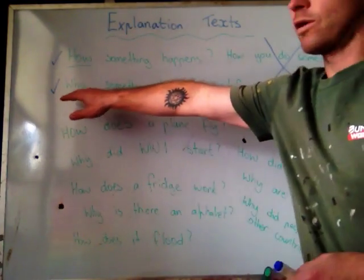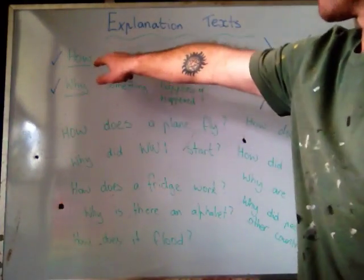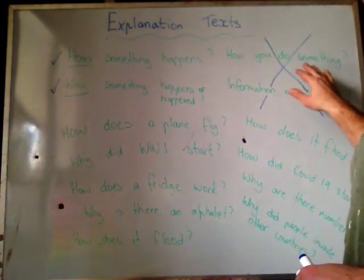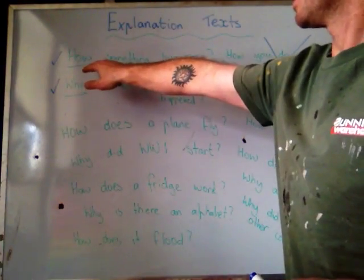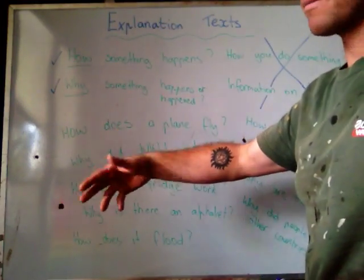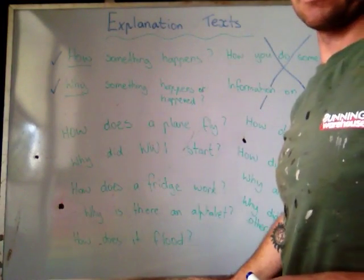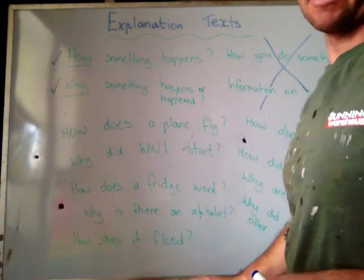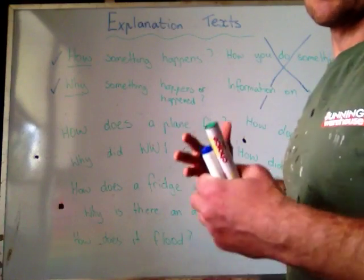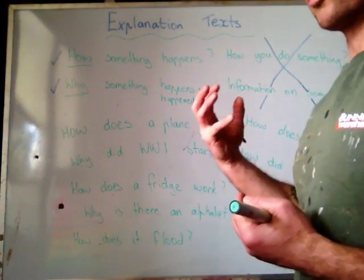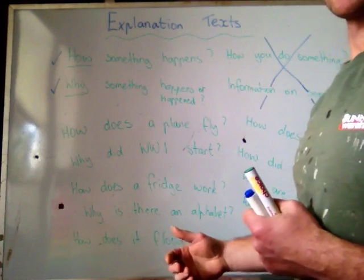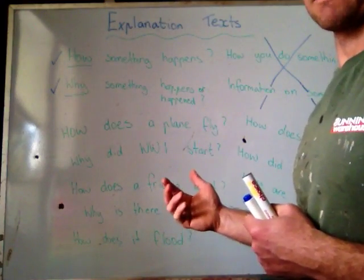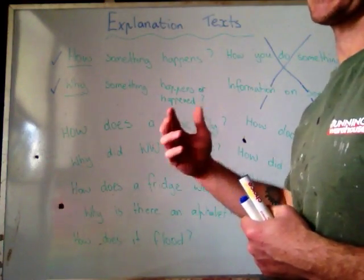Where I've got my big ticks — this is what an explanation text is, and this is what it's not. An explanation text is you explaining how something happens, or why something happens or happened. When you're in writing mode, you've got to think of why something happens or happened, or how something works. You're explaining to somebody how something works.